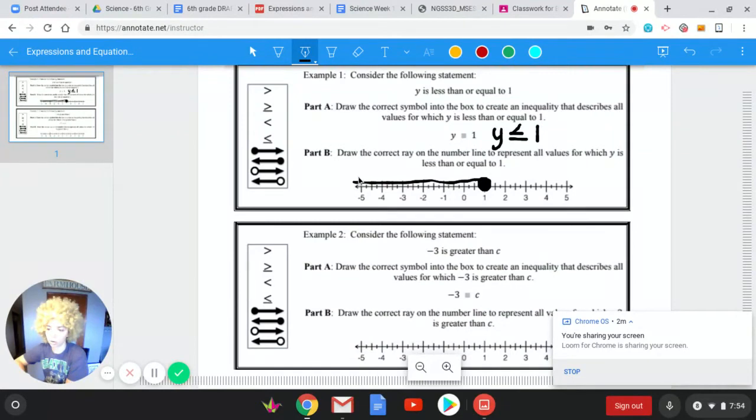Your line will probably be straighter than mine because I'm doing this on the computer. But it will look something like this. So we know that y is less than or equal to, that filled in circle tells us it can include one. And we're going to the left because all these numbers are less than one. Okay so that is example one.